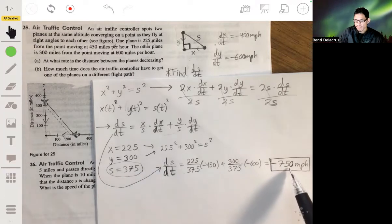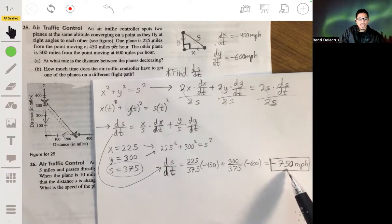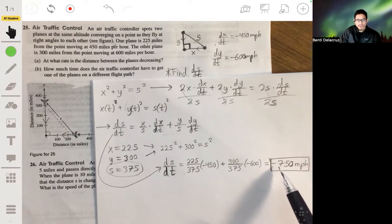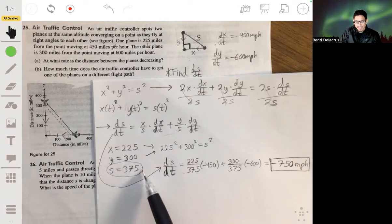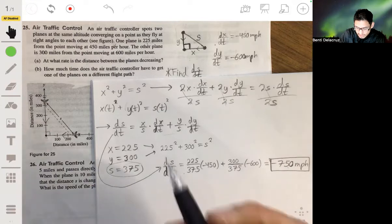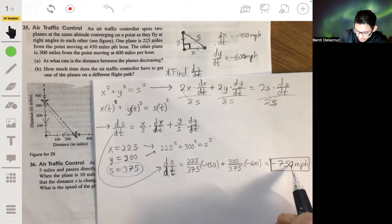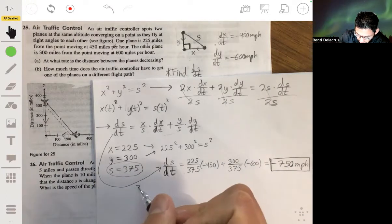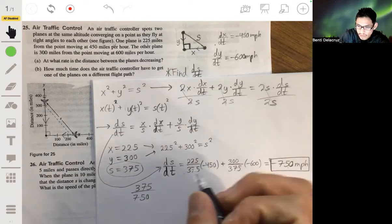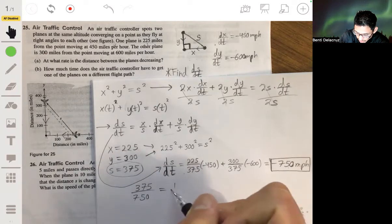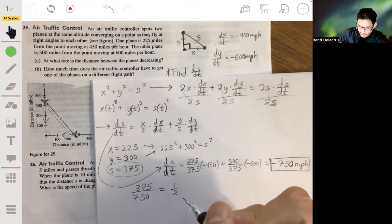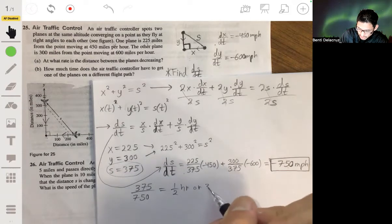So then you basically just have to divide this by that, and you get 375 divided by 750. This goes out actually nicely. That's one half. It's going to take half an hour, one half hour or 30 minutes.